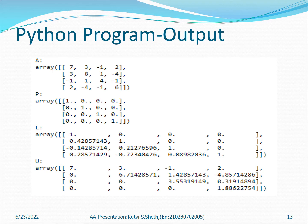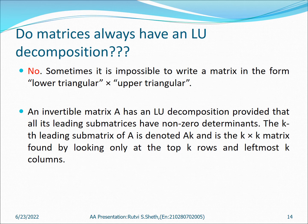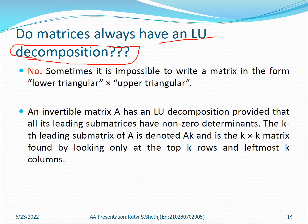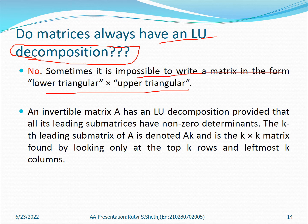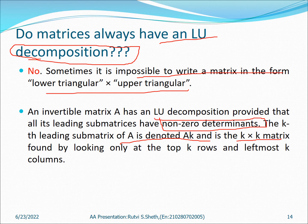Do matrices always have an LU decomposition? The answer is no. Sometimes it is not possible to write a matrix in the form of lower and upper triangular matrices. To check whether a matrix has an LU decomposition, we need to check that the first K leading sub-matrices of A, denoted AK (the K×K matrix), all have non-zero determinants. If this condition is satisfied, matrix A can be decomposed; otherwise it cannot.